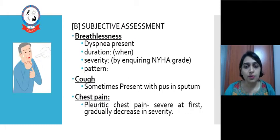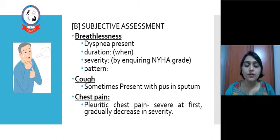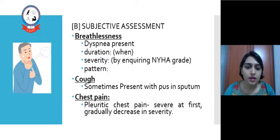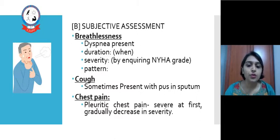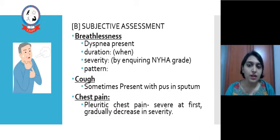In subjective assessment, we may find breathlessness — dyspnea is always present in this kind of patient. Duration, severity and pattern should be asked directly. Cough is sometimes present with pus in the sputum. Chest pain: the patient may complain of pleuritic chest pain, usually severe at first and gradually decreasing. Pleuritic chest pain is more common with dry pleurisy than Empyema Thoracis.